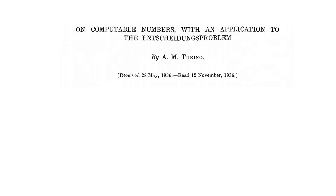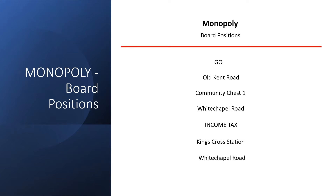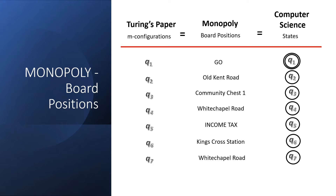So I want you to keep this in mind as we go to Turing's paper: 'We may compare a man in the process of computing a real number to a machine which is only capable of a finite number of conditions, Q1, Q2, through QR, which will be called M configurations.' What are these M configurations? What we call board positions in Monopoly are what Turing called M configurations. It defines where you are and what rules apply to you. In computer science, we call them states, and we put a special double circle around the starting state. And although I've started at Q1 and gone to Q2, Q3, Q4, I could have just as easily called them Eenie, Meenie, Miney, and Moe.